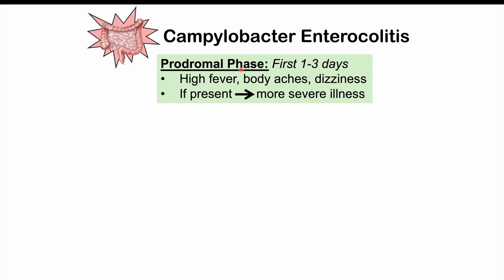Some cases can have a prodromal phase occurring within the first one to three days. This can include high fever — 40 degrees Celsius or 104 degrees Fahrenheit — body aches and pains, and dizziness in some cases. If this prodromal phase is present, it indicates the patient will have a more severe illness. Some patients have the prodromal phase before gastrointestinal symptoms begin; in other cases, patients simply start with gastrointestinal symptoms.